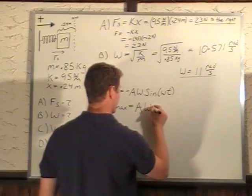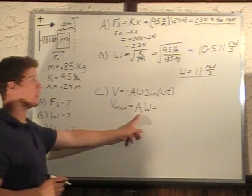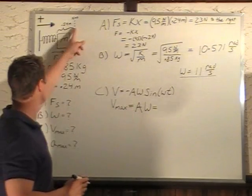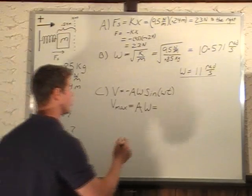So the max velocity occurs at the unstretched point. So V max equals A omega. Our amplitude is going to be the max distance away from the x equals 0 point, which is our starting point of 0.24 meters.